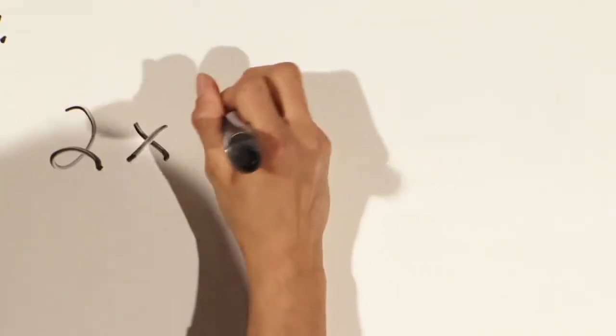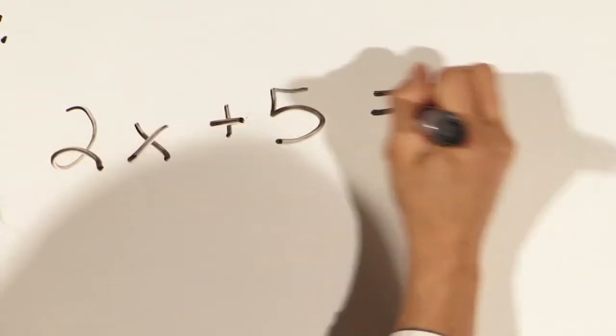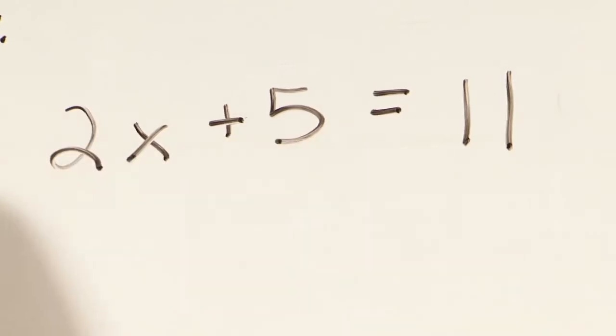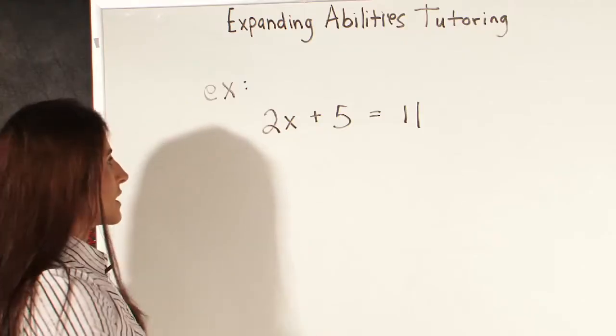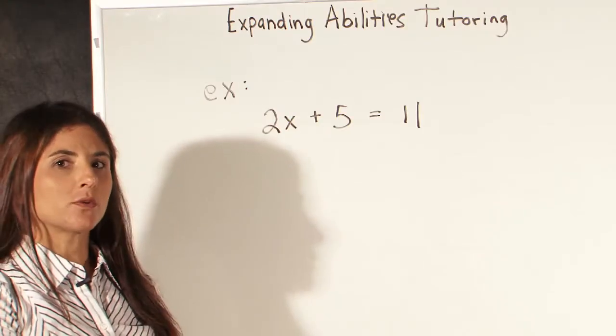We are going to go over some tips on easy algebra manipulations. So we're going to start off with this simple equation here, 2x plus 5 equals 11.